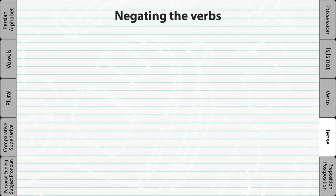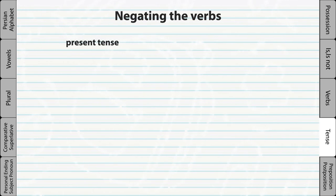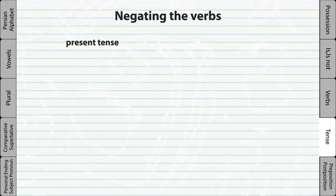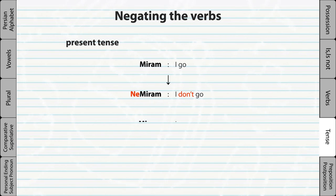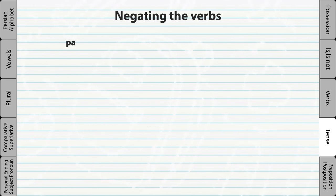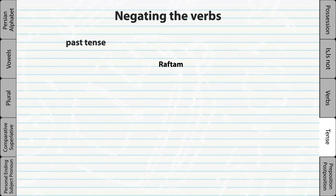Negating the verbs. We can negate the present tense by simply adding 'ne' at the beginning. And we can negate the past tense by adding 'na' at the beginning.